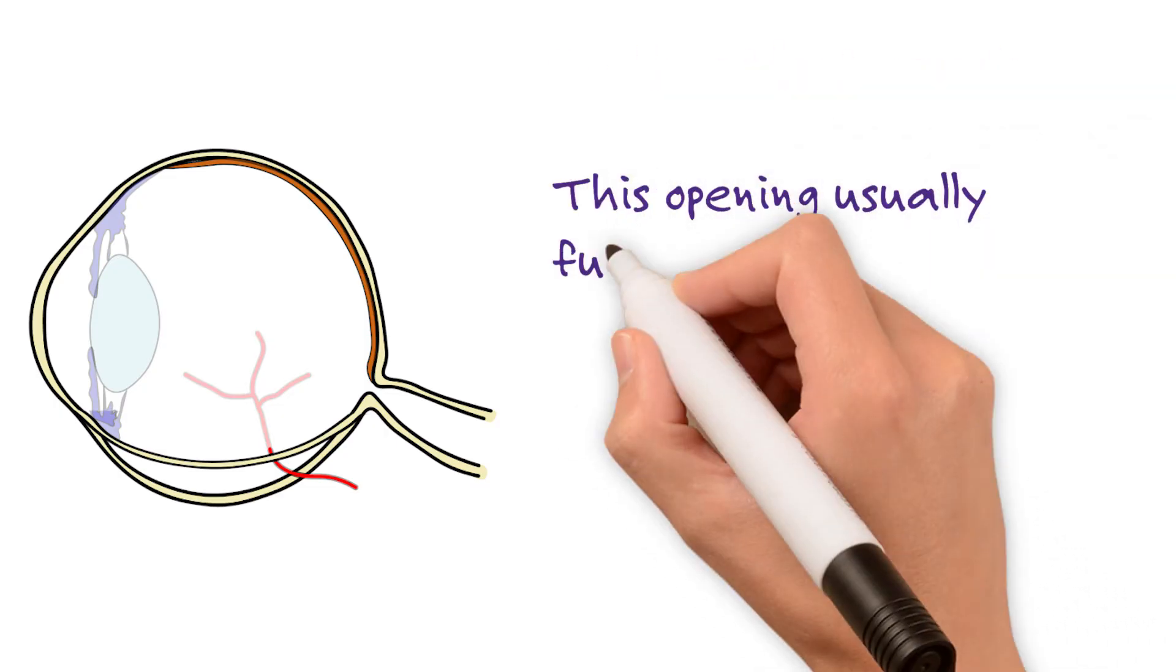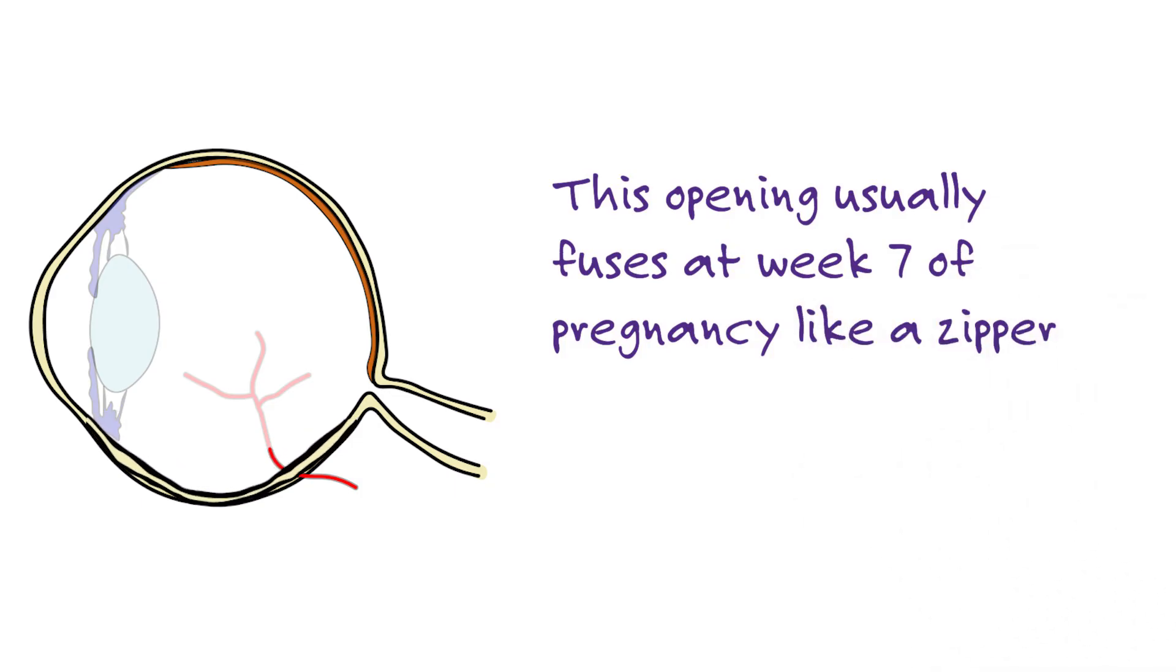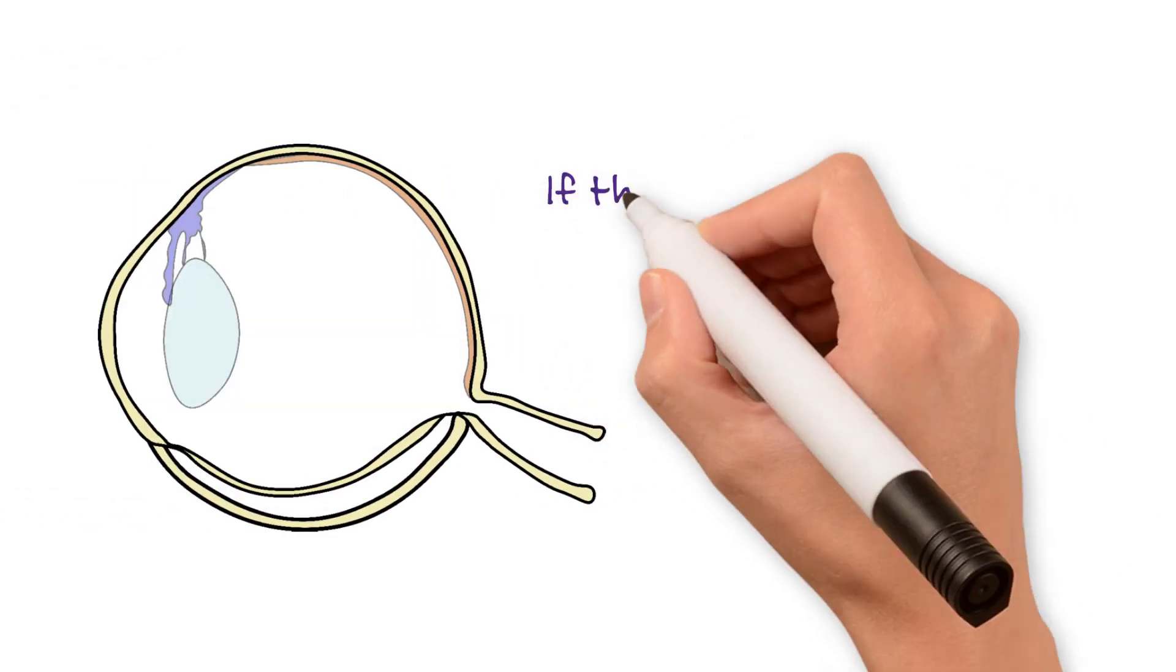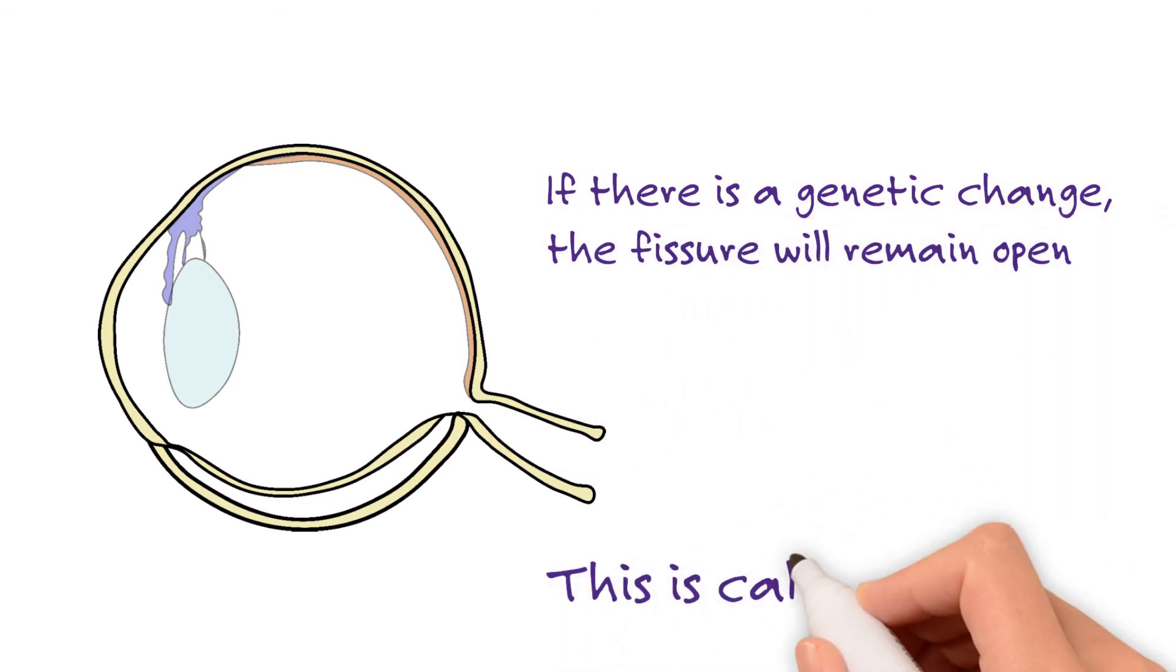This opening usually fuses at week 7 of pregnancy, like a zipper. If there is a genetic change, the fissure will remain open. This is called a coloboma.